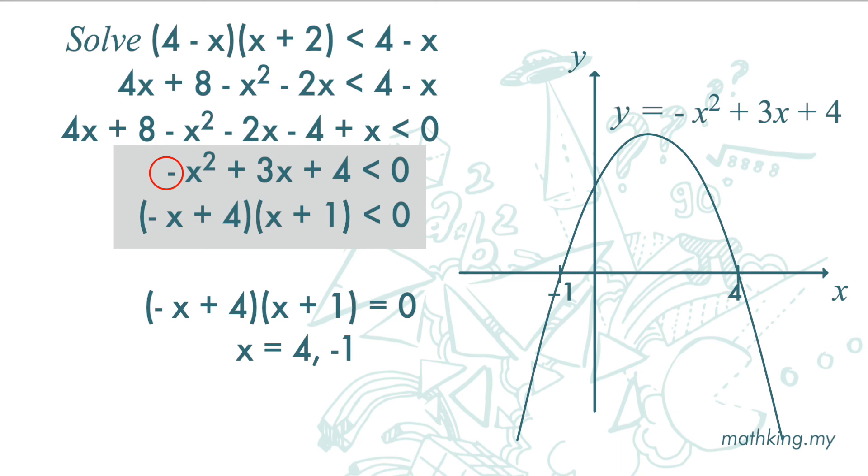Negative x square plus 3x plus 4 is less than 0 is here. And the x value is this area and this area, which is x is less than negative 1 and x is more than 4.